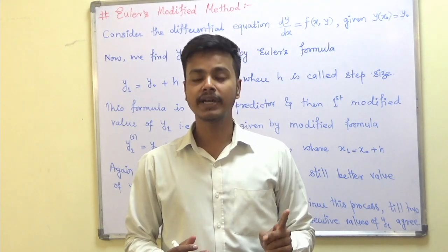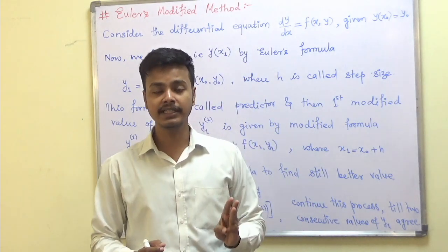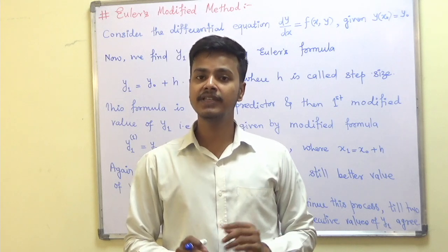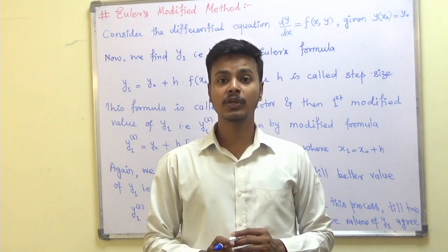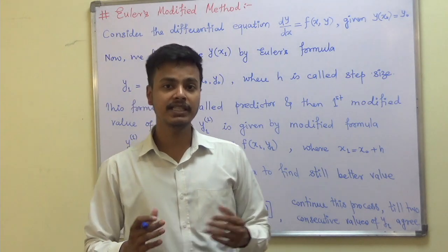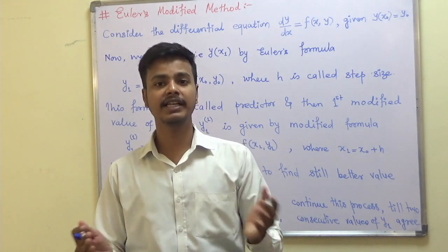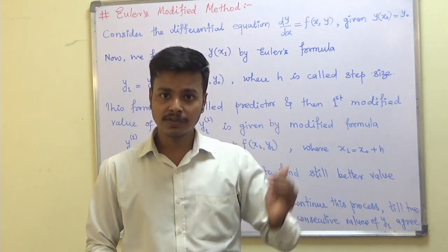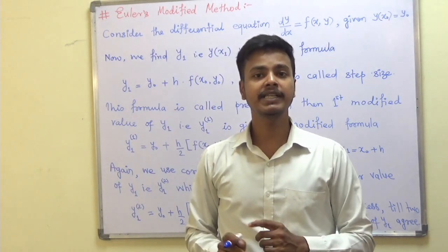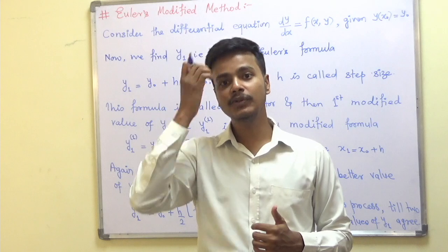Those four methods are: number one, Taylor series method; number two, Euler modified method; number three, Runge-Kutta method; and number four, Milne's predictor-corrector method. In the last learning video we saw how to get the solution of a first order differential equation using the Taylor series method. The best thing about that method is that it is a single step method — in a single step you get the solution — whereas the rest of the methods, Euler modified, Runge-Kutta, and Milne's predictor-corrector, are iterative methods.